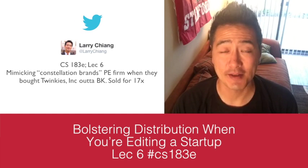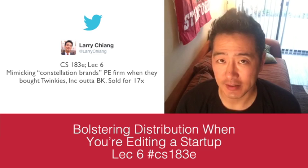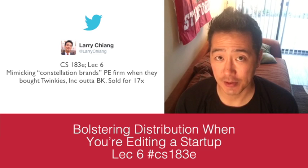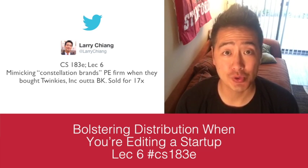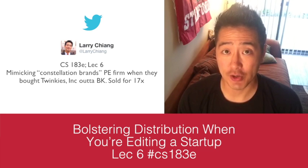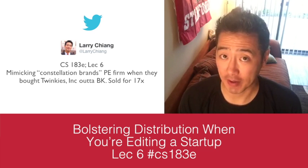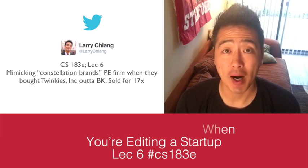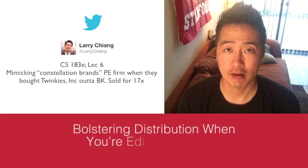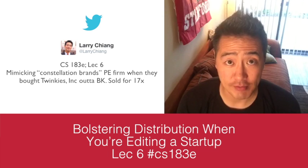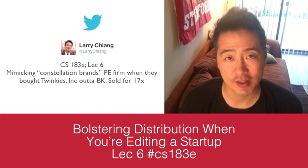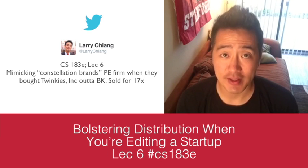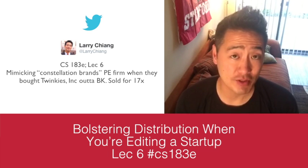For CS183Edit, Constellation Brands — the people that make Ding Dongs, Twinkies, and Ho Ho's — went under. Constellation Brands was bought out of bankruptcy by a PE firm. Guess what they did? One thing — this is what all PE firms do with a turnaround: they just focus on the distribution, they focus on the sales, they focus on the money in.